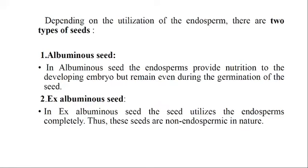Depending on the utilization of endosperm, there are two types of seeds. The first one is albuminous seeds — the endosperm provides nutrition to the developing embryo but remains even during the germination of the seed. This means the endosperm persists up to the germination of the seed; that type of seed is the albuminous seed.